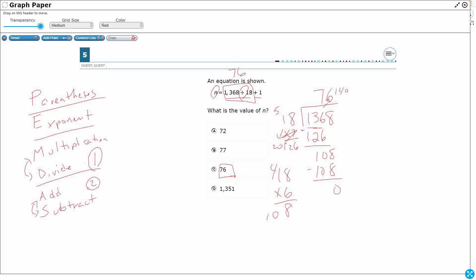But now I've got 76 plus 1, right? We can't do all that work and forget the plus 1. So it's n equals 76 plus 1. So our answer here is really going to be this 77.